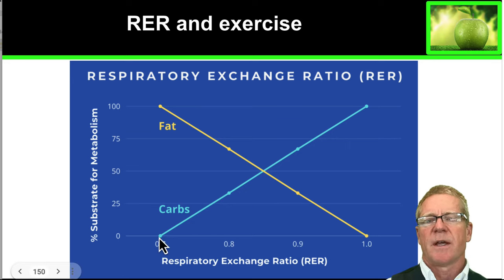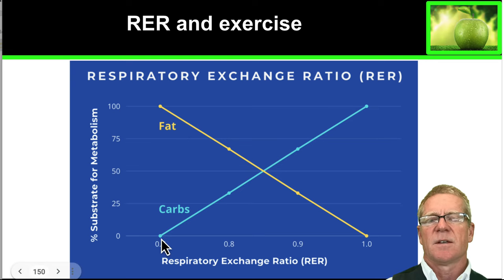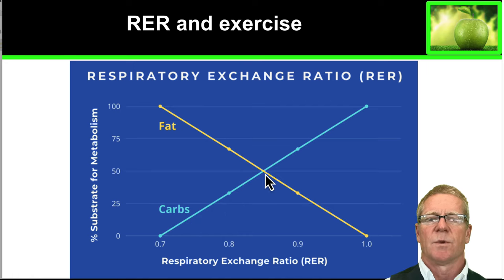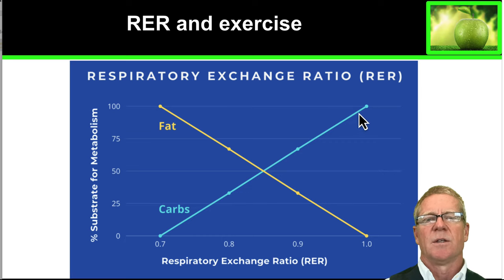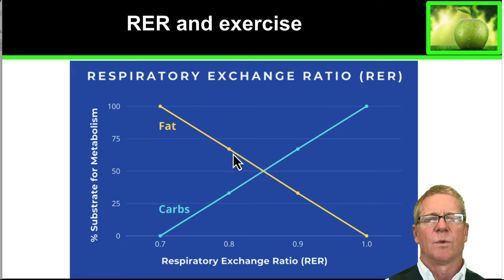As carbohydrate use climbs, fat use declines. As exercise intensity increases, the body increasingly relies on its first choice fuel — carbohydrates. So as exercise intensity increases, carbohydrate use increases until the respiratory quotient reaches one, and fat metabolism will decline.